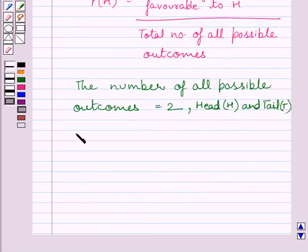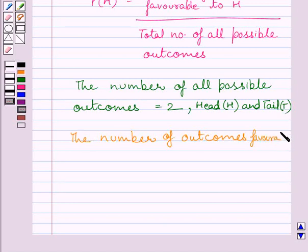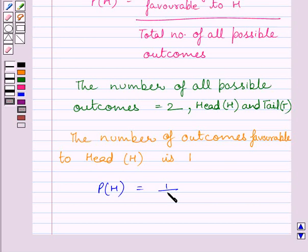Now we also know that number of outcomes favorable to head, that is H, is 1. So we get probability of getting heads is equal to 1 upon 2.